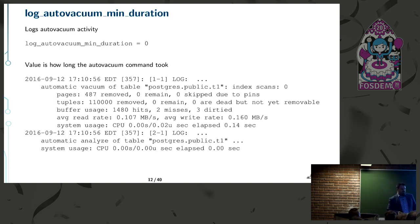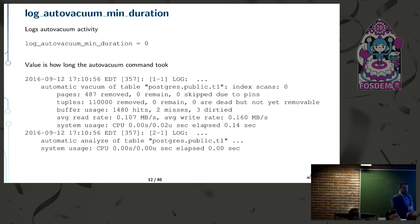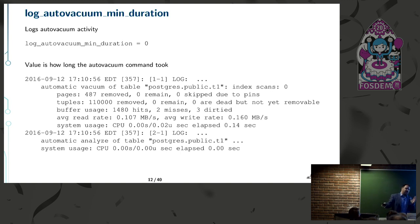log_autovacuum_min_duration gives you lots of information about autovacuum. Set it to zero and it'll log every time autovacuum ran and how much work it did. Running autovacuum can have some impact, but you need to run it — don't disable it. Autovacuum helps with query performance by dealing with dead tuples and bloat, and by updating the visibility map, which is important for index-only scans. Instead of disabling it, set the duration to zero and look at whether it's actually causing problems — most of the time it isn't.